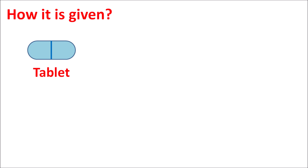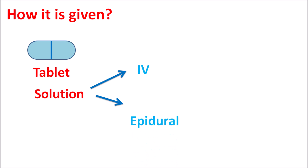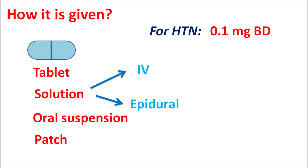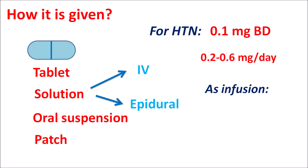Clonidine is available as a normal tablet and as an extended-release tablet, as a solution for intravenous and epidural injection, as an oral suspension, and as patches. For hypertension, the drug is started at an initial dose of 0.1 mg twice daily (morning and bedtime), maintained at 0.2 to 0.6 mg per day in divided doses. For epidural infusion, the rate may be started at 30 micrograms per hour to control cancer pain. For ADHD, the drug is started at 0.1 mg twice daily.